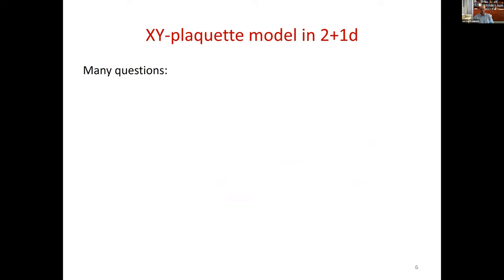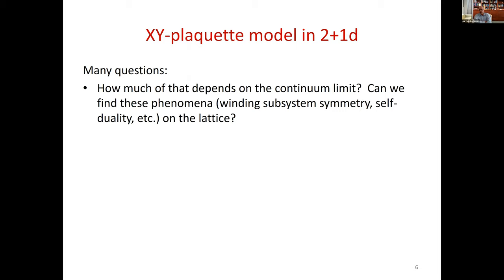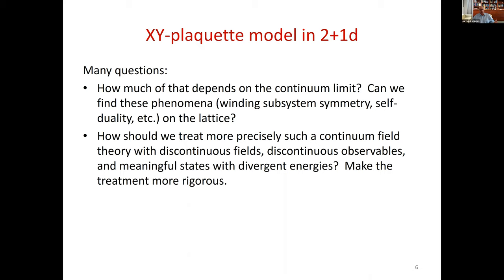This raises many questions. How much of that depends on the continuum limit? My goal is to understand how to think of such quantum field theories in the continuum. The continuum theory has all these bizarre properties — how much is really tied to the continuum, and how much can be realized already on the lattice? In particular, we discussed winding subsystem symmetry, self-duality, and so on. Equivalently, we should ask how to treat this continuum field theory more carefully — discontinuous fields, discontinuous observables, and meaningful states with divergent energies. Does this really make sense? How should we think about all these questions? My goal is to answer these questions.